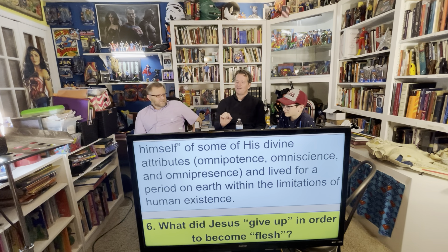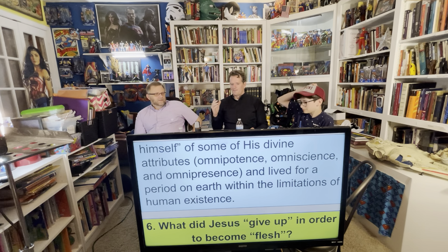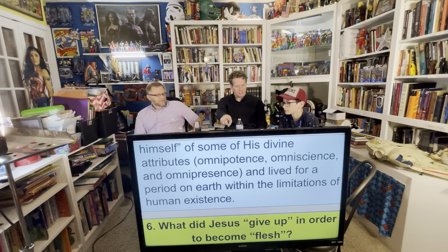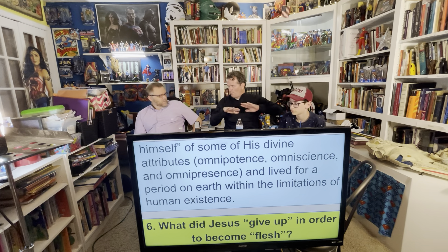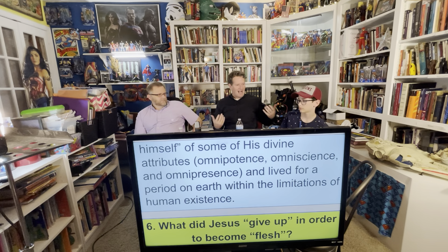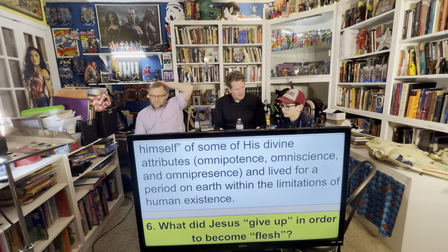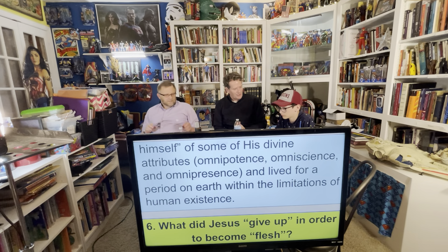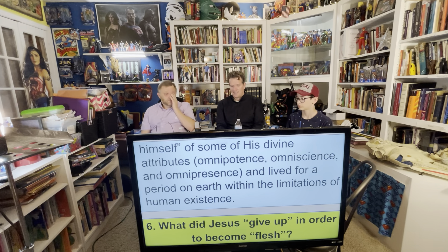There are glimpses of him having all these attributes — he says to Nathanael, 'I saw you when you were under the fig tree,' showing Christ knows what's happening in all places. Practically, I think as he enters human state, he chooses not to retain the privilege of those attributes — maybe like blocking them so he doesn't access them all the time while on earth. He still has them; he just doesn't play the card.